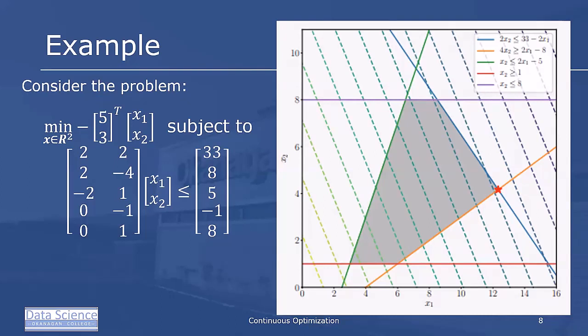The objective function here is linear and that results in these contour lines that we see dotted. The constraint set in standard form is translated in the legend. The optimal values must lie in the shaded feasible region and the optimal solution is actually shown as a star.